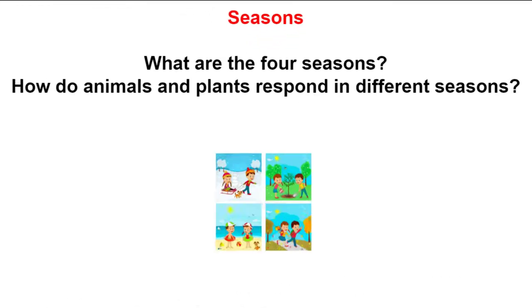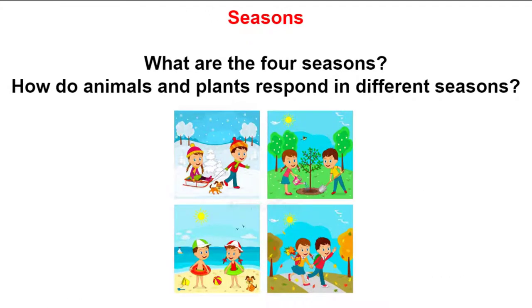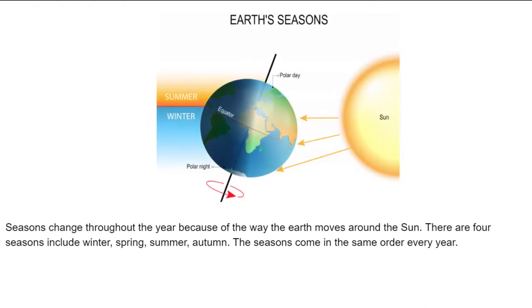What are the four seasons? How do animals and plants respond in different seasons? Seasons change throughout the year because of the way the earth moves around the Sun. There are four seasons: winter, spring, summer, and autumn.